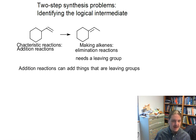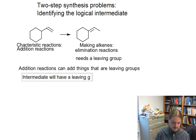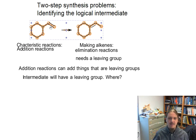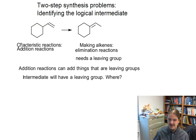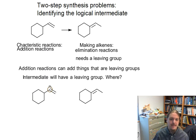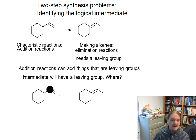Now the next question is: my intermediate is going to have a leaving group — but where do I want that leaving group? In the case where you're moving functional groups to adjacent positions, it's sometimes pretty easy to answer that question. If we're going to do an addition reaction on the first compound, those addition reactions have to happen at one of these two carbon atoms.